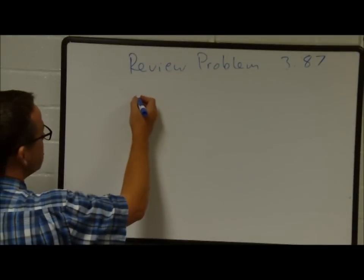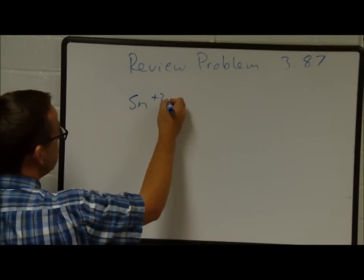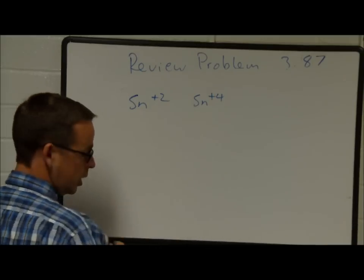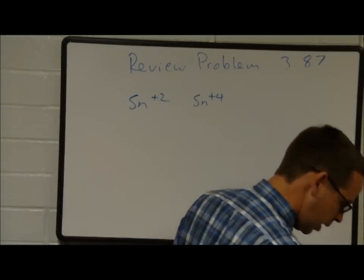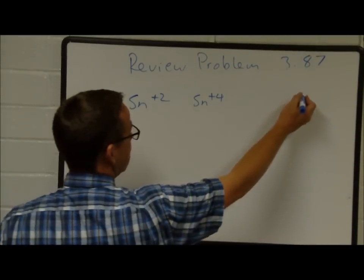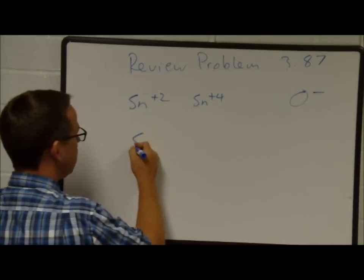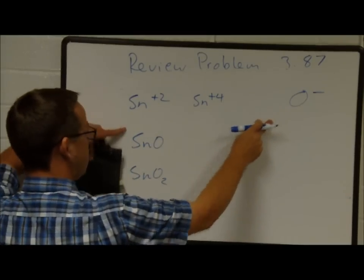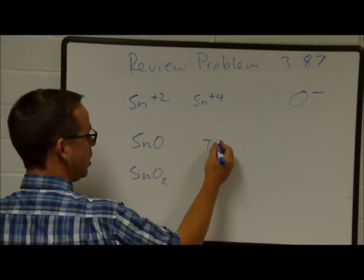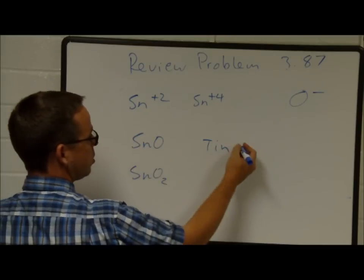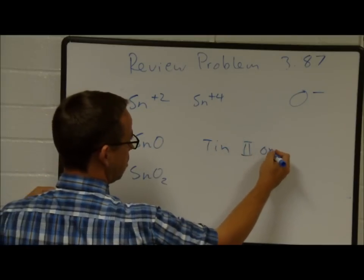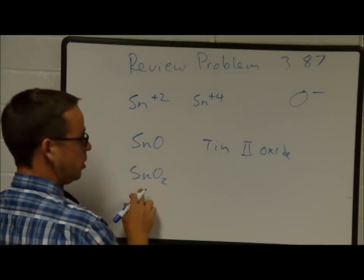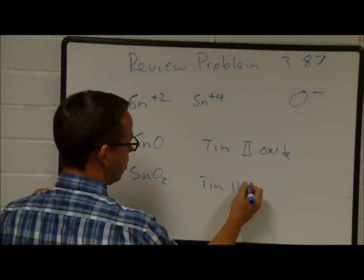For tin (387B): Sn can form Sn²⁺ or Sn⁴⁺. Combining with O²⁻ gives SnO (tin 2 oxide) and SnO₂ (tin 4 oxide).